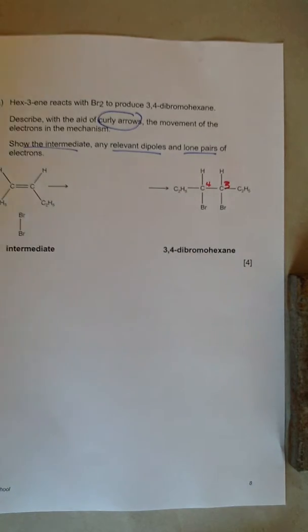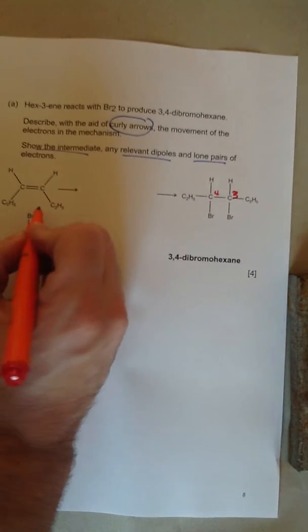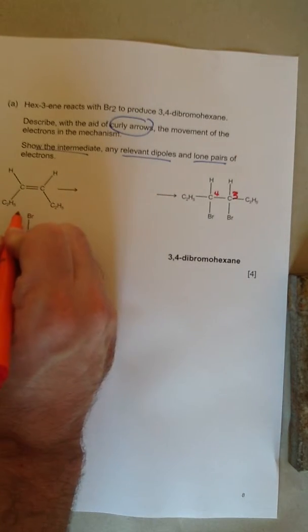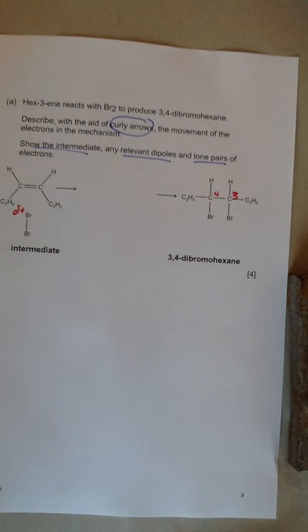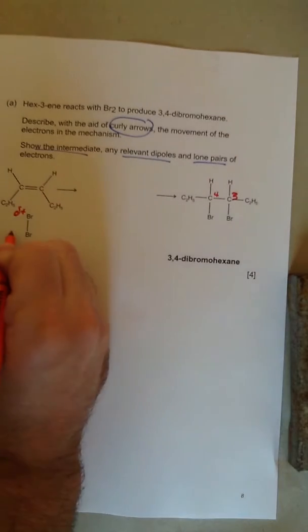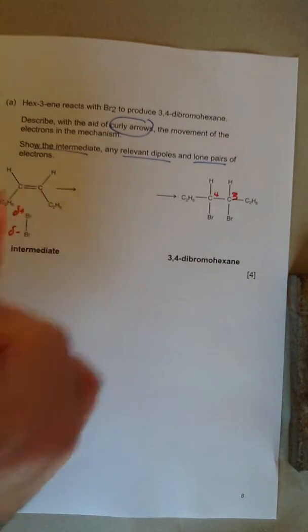Opposite things attract. So imagine there's lots of electrons there, it's going to induce a dipole into the bromine. It's going to attract a bit of the bromine and it becomes delta positive. It induces the dipole, it makes the bromine delta positive. So the bottom one must be delta negative. And that happens when it gets close to the double bond.